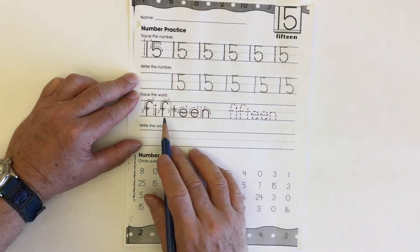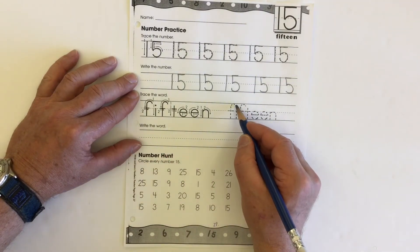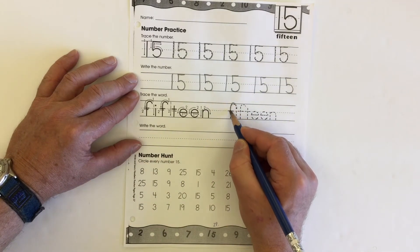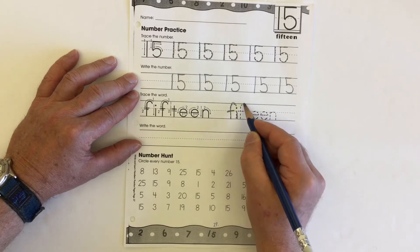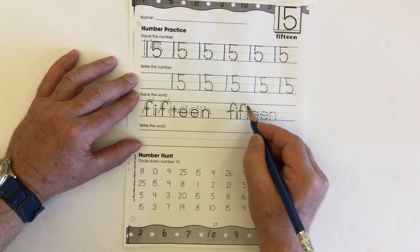There we go. Here's the word fifteen: f-i-f and then teen, t-e-e-n. Fifteen.